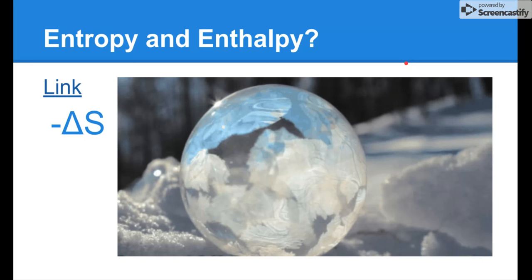This is an implosion — the reverse of an explosion. Instead of the building exploding outward, it's being rebuilt. This is a positive delta H because it is gaining energy — when a building explodes, energy goes out, but in an implosion all the energy goes back in. It's a negative delta S because it is becoming less disordered. This is a non-spontaneous reaction, as we can see from Gibbs free energy.